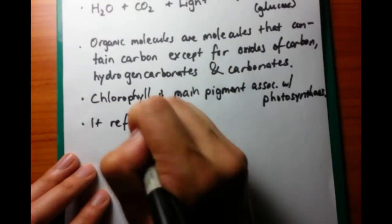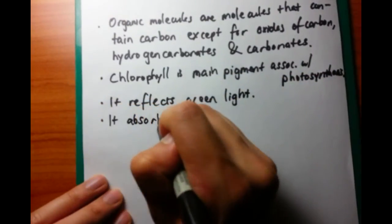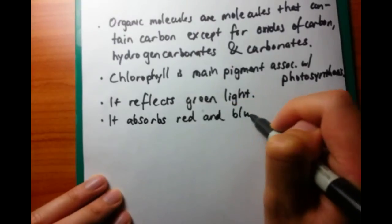Chlorophyll is a green pigment. That means it reflects green light, which you see as green in your eyes, and therefore absorbs red and blue light.